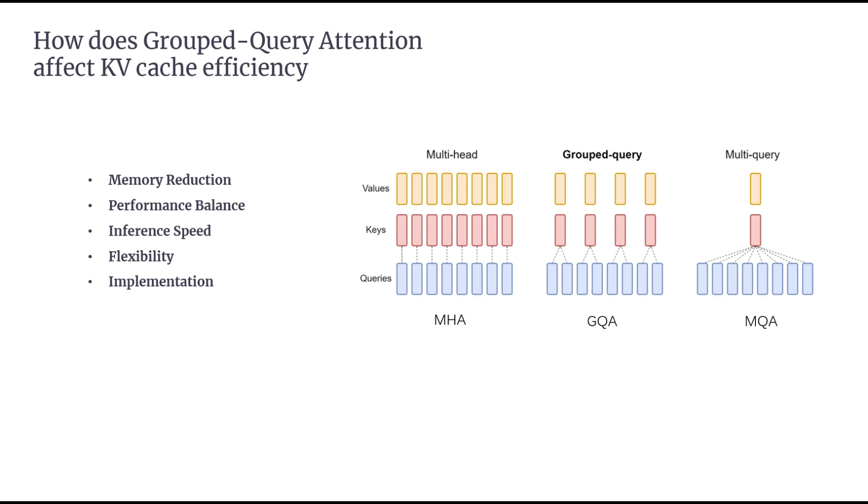In summary, Grouped Query Attention (GQA) is a highly effective optimization for LLAMA models. By reducing the size of the KV cache, it lowers memory requirements, speeds up inference, and maintains model quality. This makes GQA a crucial technique for enhancing the performance of large language models, especially on memory-constrained devices or for faster text generation.